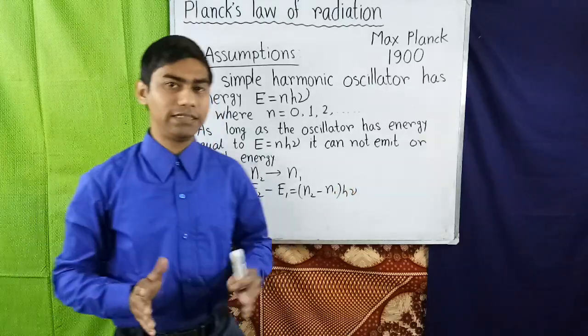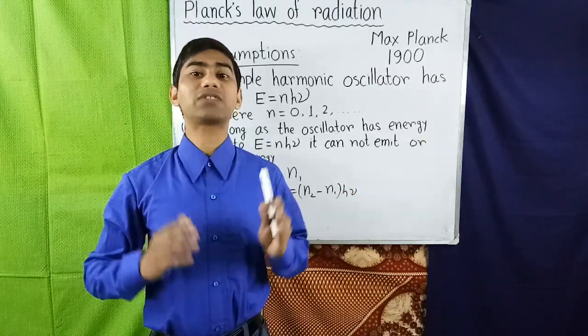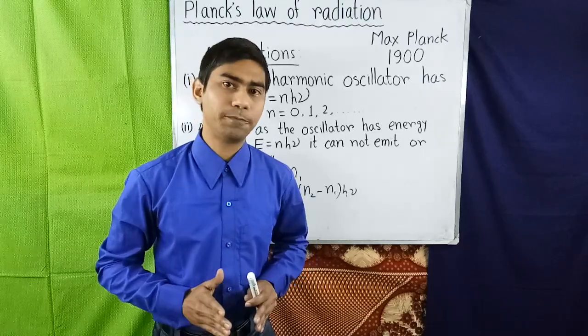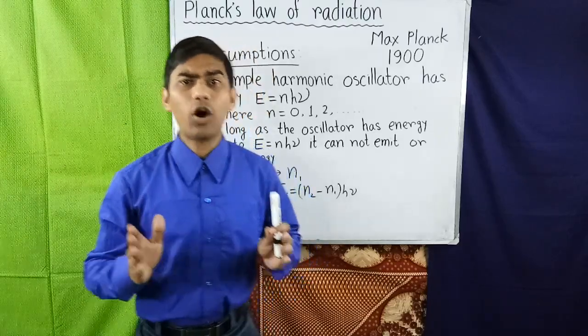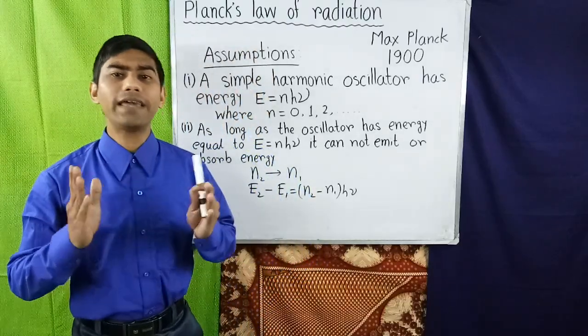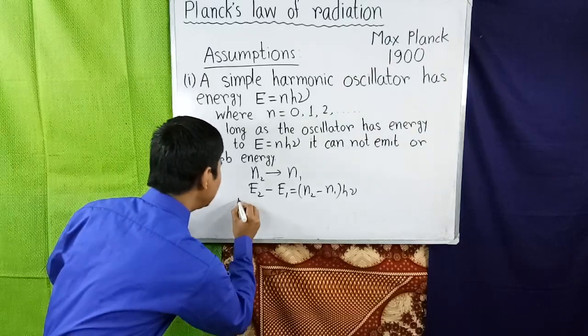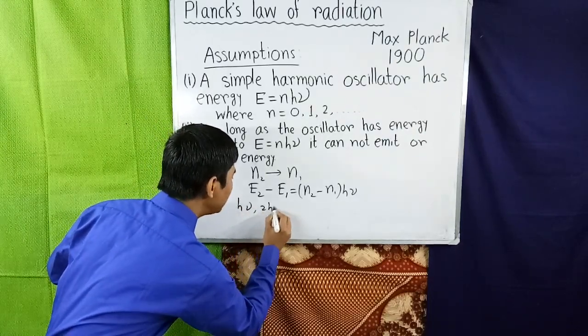Similarly, an oscillator absorbs a quantum h·ν of energy when it jumps up to its next higher energy state. Thus the emitted or absorbed energies may be h·ν, 2h·ν, 3h·ν, respectively.